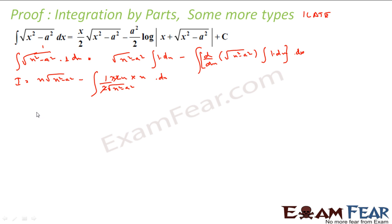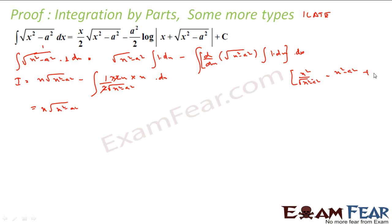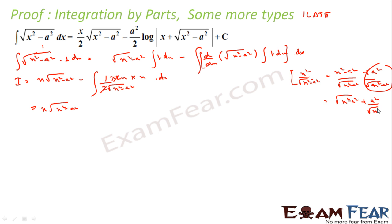Now I can break x²/√(x²−a²) by writing it as (x²−a²)/√(x²−a²) + a²/√(x²−a²). The first part simplifies to √(x²−a²), and the second I can easily integrate. So: I = x·√(x²−a²) − ∫√(x²−a²) dx − ∫a²/√(x²−a²) dx. That first integral is I itself, giving: 2I = x·√(x²−a²) − a²·∫dx/√(x²−a²).